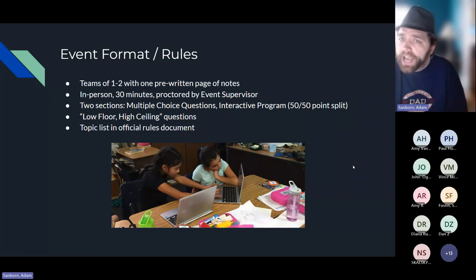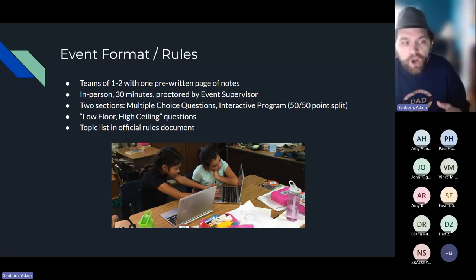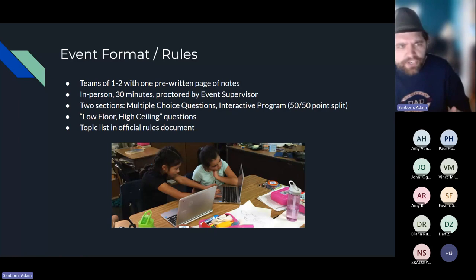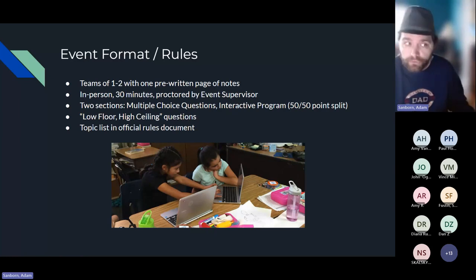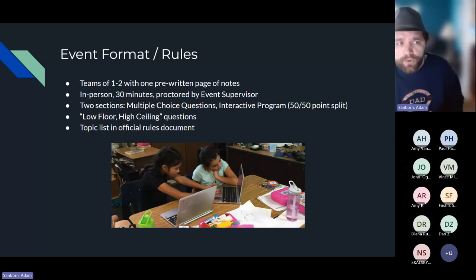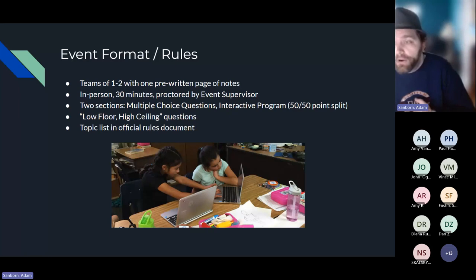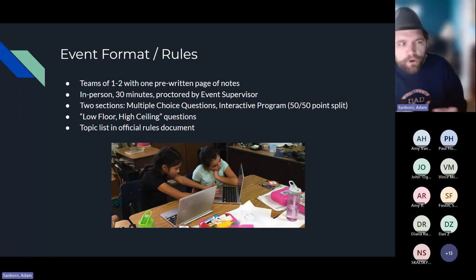It's a 50/50 points split. Right now we're looking at 40 multiple choice questions and 40 points possible on the interactive program — so 40 and 40, just to give you an idea of timing. Questions will be a mix of easy, medium, and hard, and each question is worth one point.